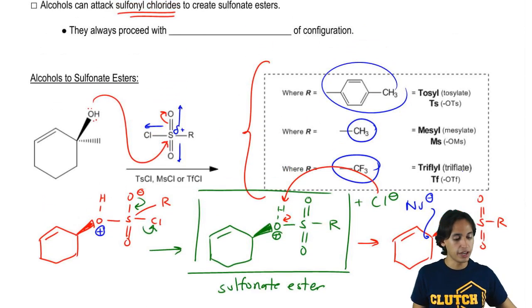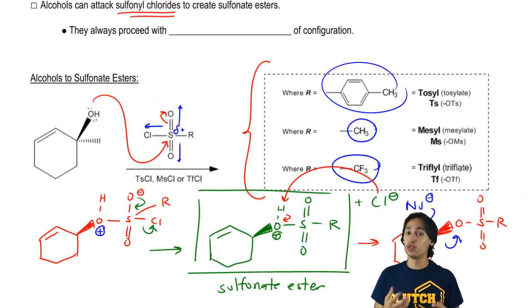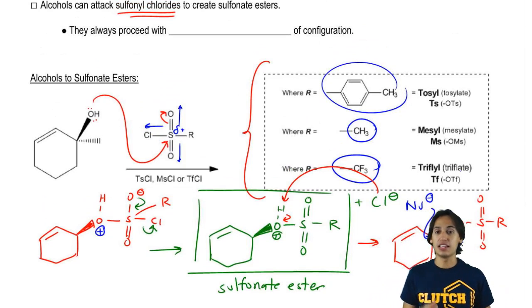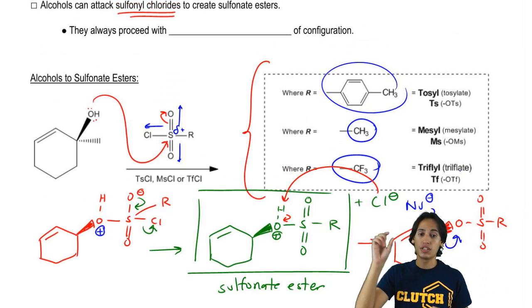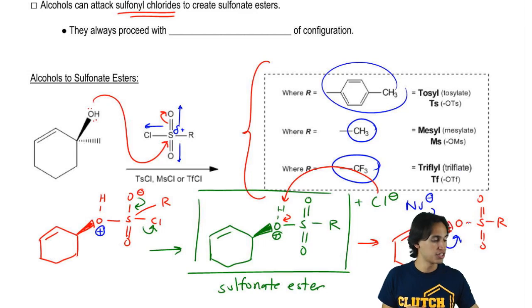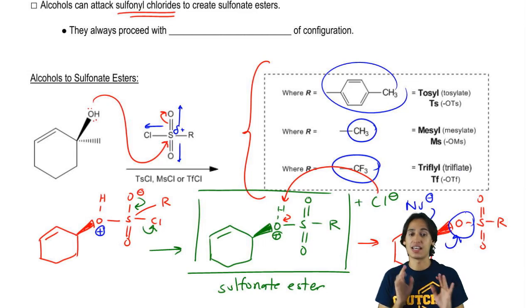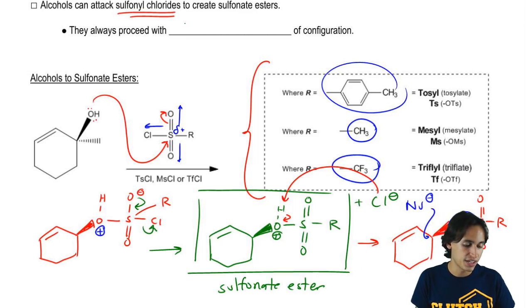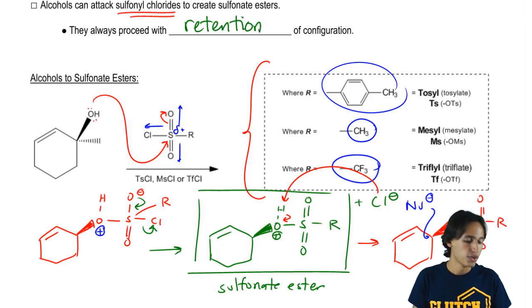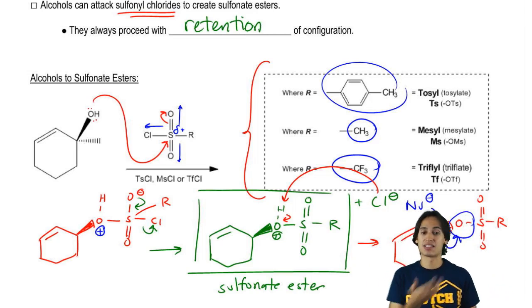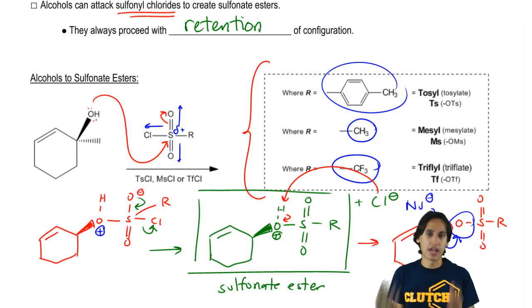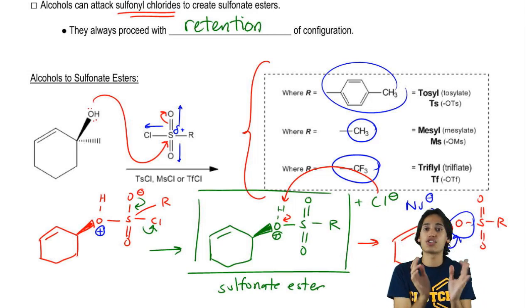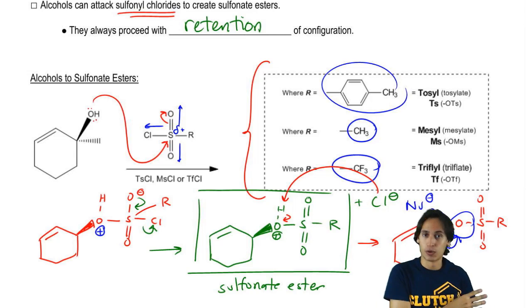Up here there was a blank that I skipped earlier. And it's actually really important. Basically because this reaction all takes place on the O, and notice that the O never gets attacked during the entire mechanism for sulfonate ester, this reaction is going to proceed with retention of configuration. Because I'm never doing a backside attack during the course of the reaction, I'm always just ending at the sulfonate ester, and then I'll figure out what to do with it later.